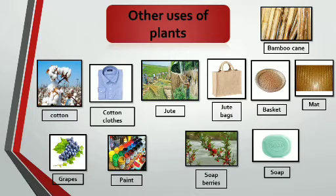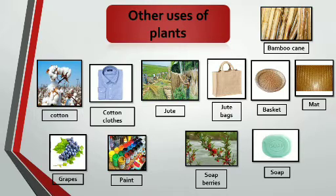We get clothes from cotton. From jute we get jute bags. Bamboo cane is used for making baskets, mats, etc.